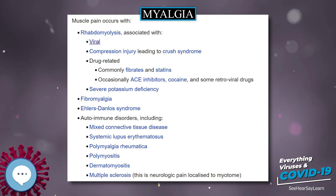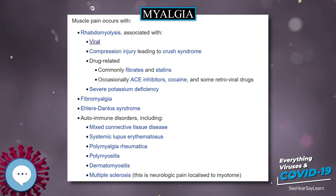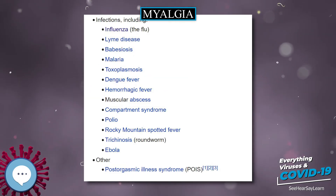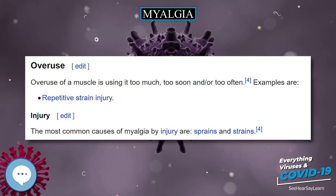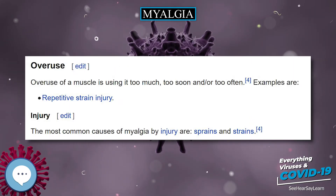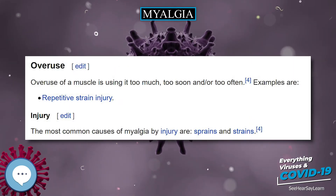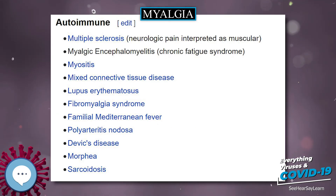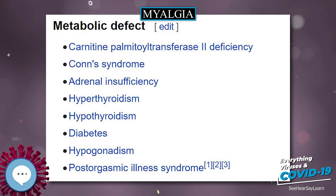The most common causes of myalgia are overuse, injury, or strain. However, myalgia can also be caused by diseases, medications, or as a response to a vaccination. Dehydration at times results in muscle pain as well, for people involved in extensive physical activities such as workout. It is also a sign of acute rejection after heart transplant surgery.